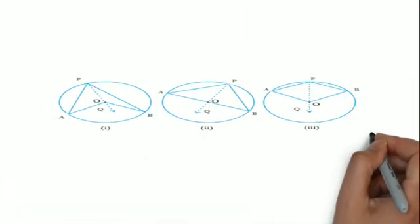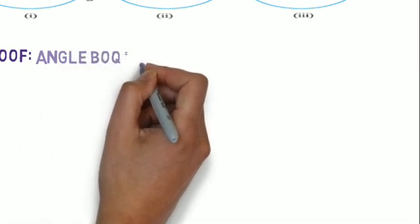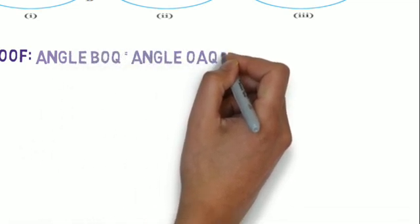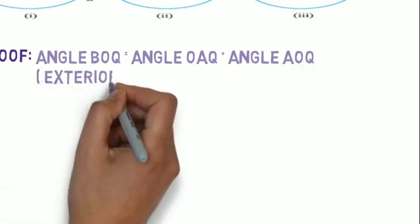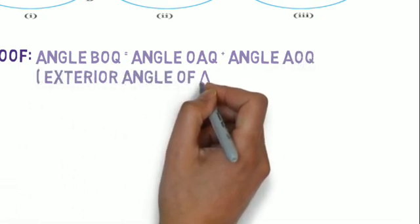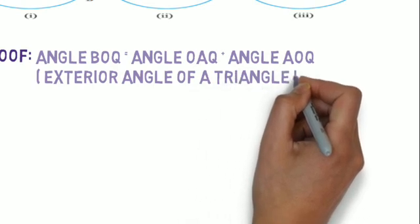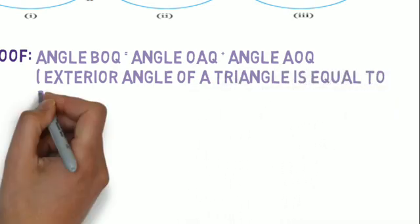In the proof, I will write that angle BOQ equals angle OAQ plus angle AOQ, because the exterior angle of a triangle is equal to the sum of the two interior opposite angles. This is a theorem you already know.